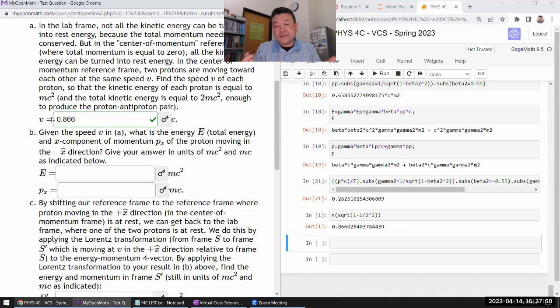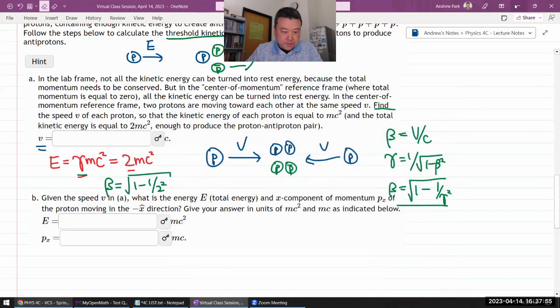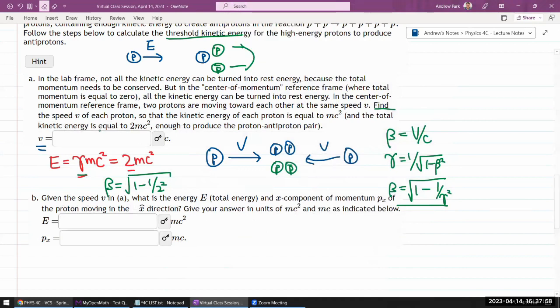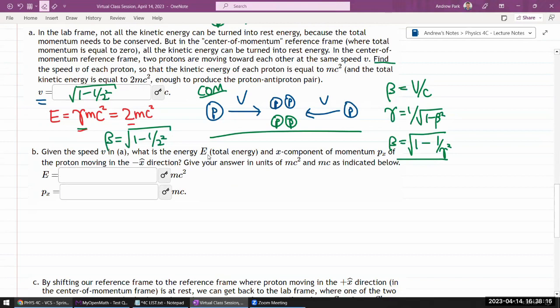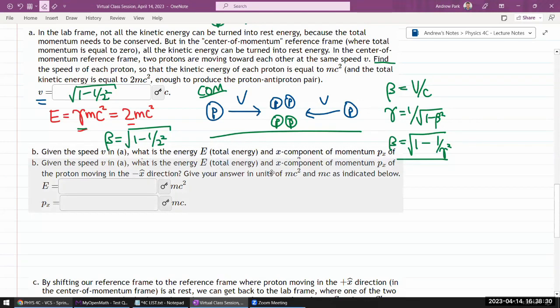So the speed is given by square root of one minus one over two squared. In the center of momentum frame, that's the answer. The rest of the question parts are going to have us do a Lorentz transformation on this setting to get what we should see in the lab frame.